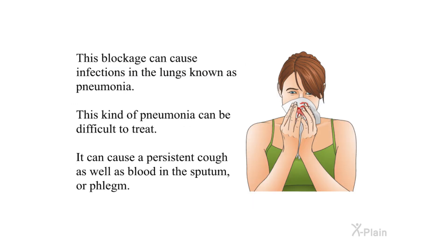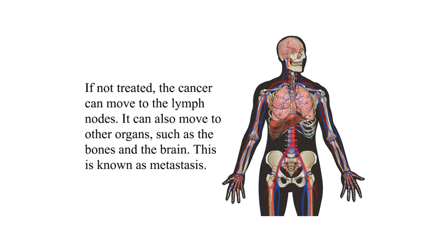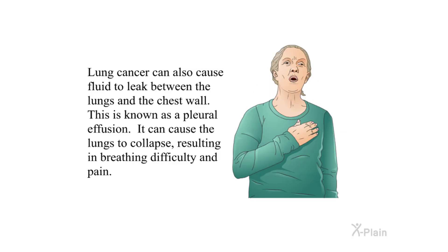This blockage can cause infections in the lungs known as pneumonia, which can be difficult to treat. It can cause a persistent cough as well as blood in the sputum or phlegm. If not treated, the cancer can move to the lymph nodes and to other organs such as the bones and the brain — this is known as metastasis. Lung cancer can also cause fluid to leak between the lungs and the chest wall, known as a pleural effusion, which can cause the lungs to collapse, resulting in breathing difficulty and pain.